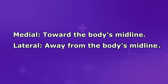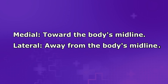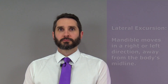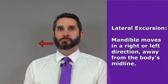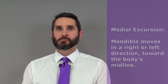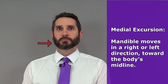Anatomists use directional terms to specify the type of excursion. When the lower jaw moves to either the left or the right away from the midline of the body, they call that lateral excursion. When the mandible moves closer to the center of the body, it's called medial excursion.